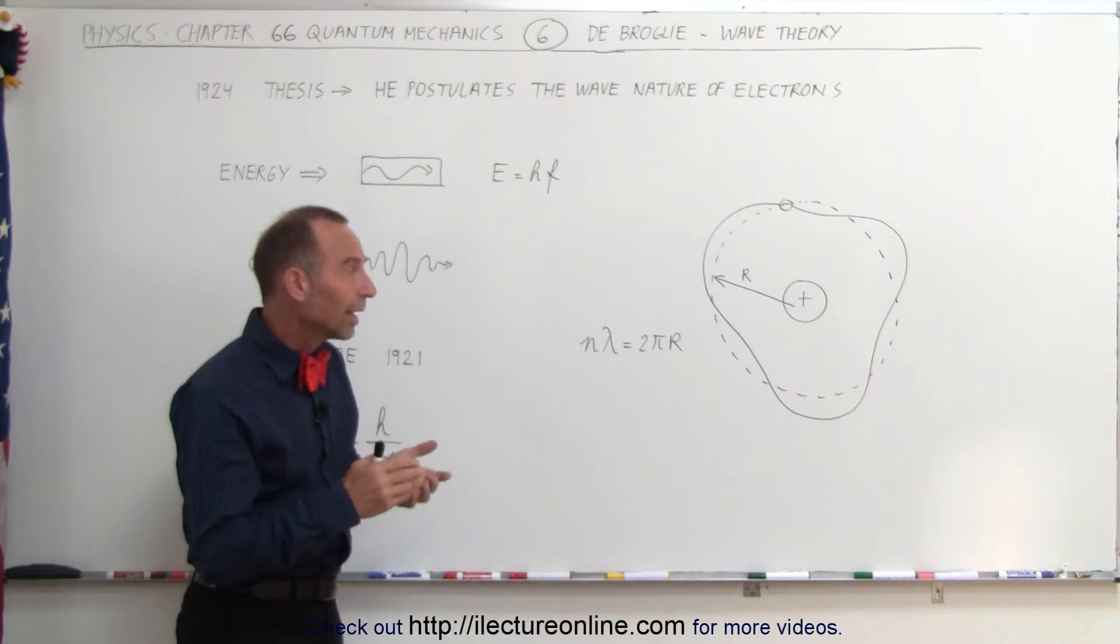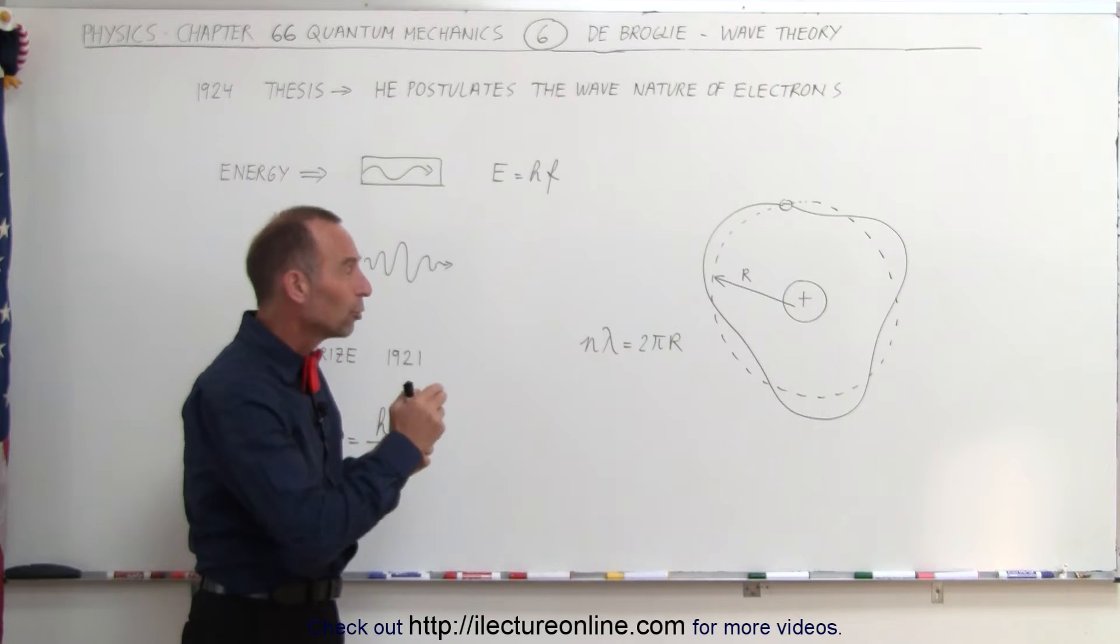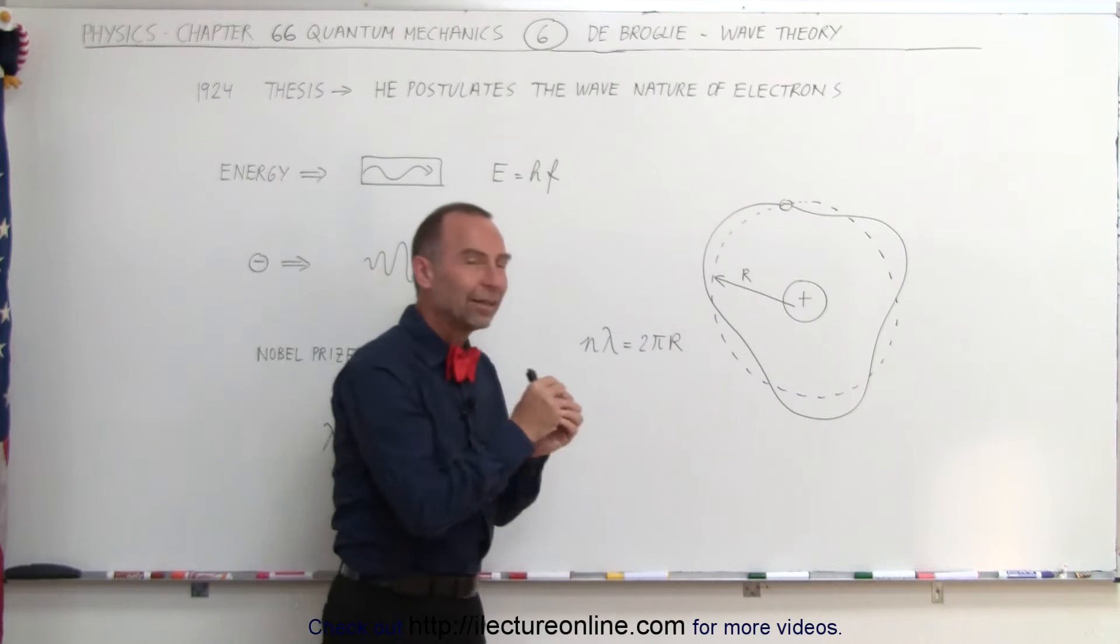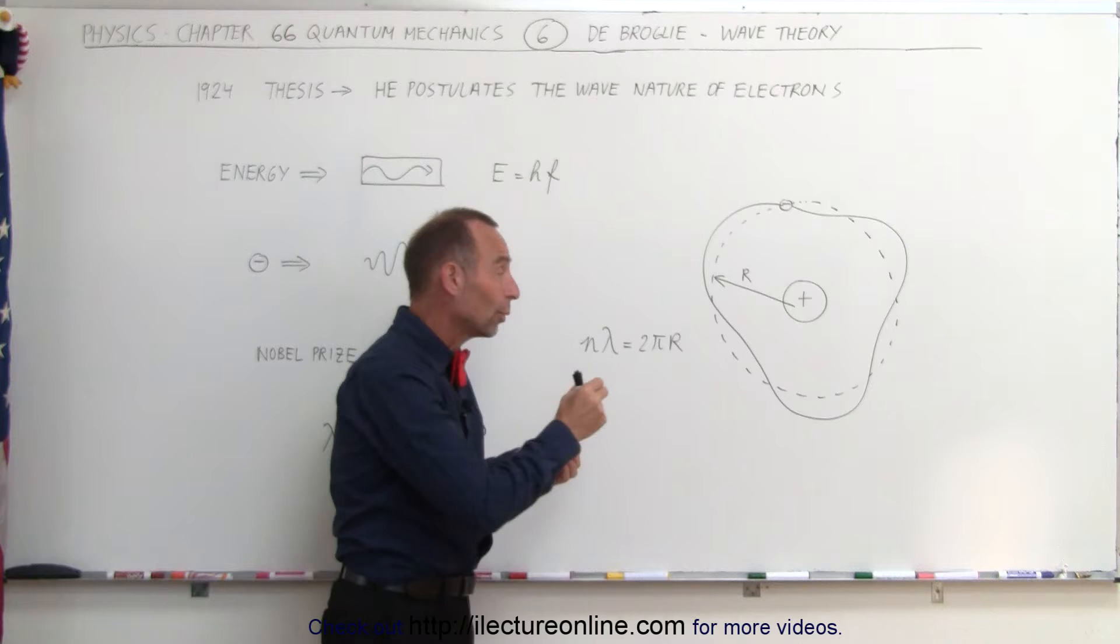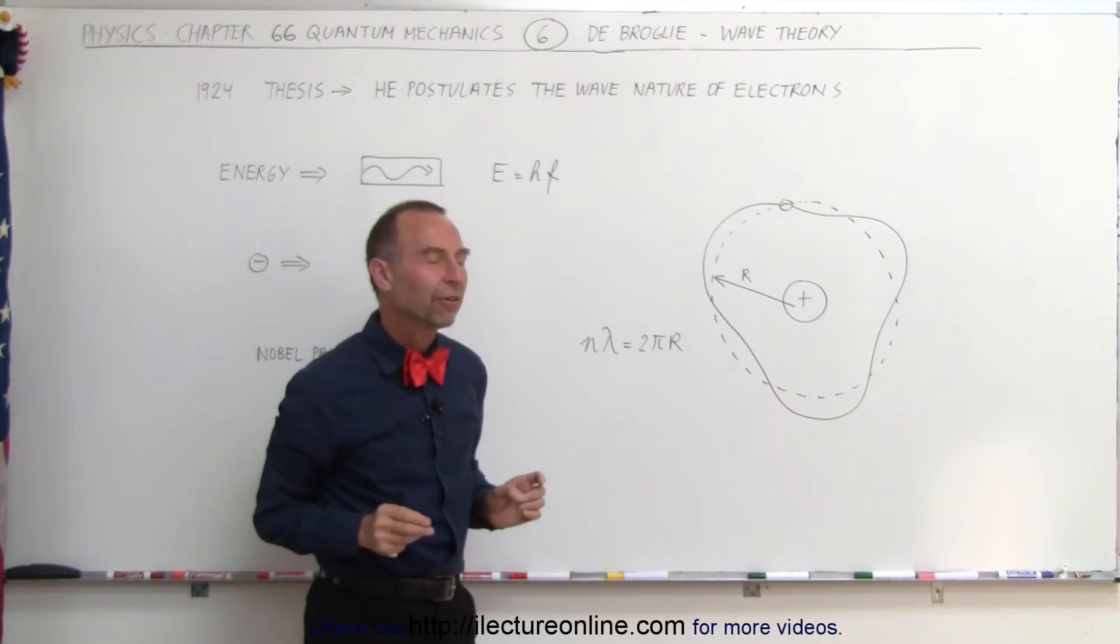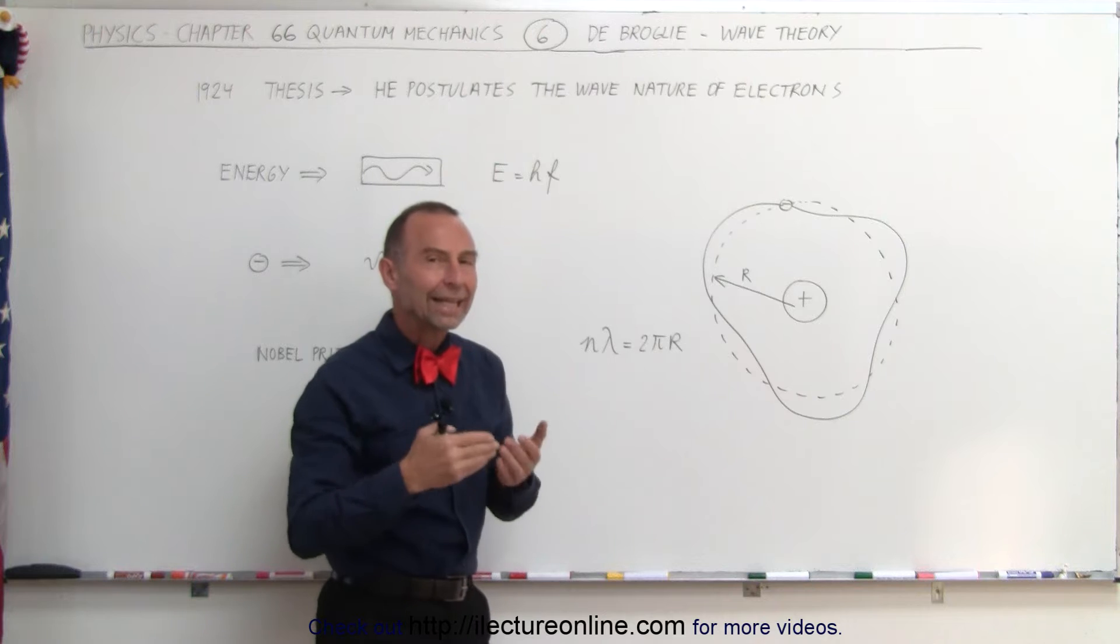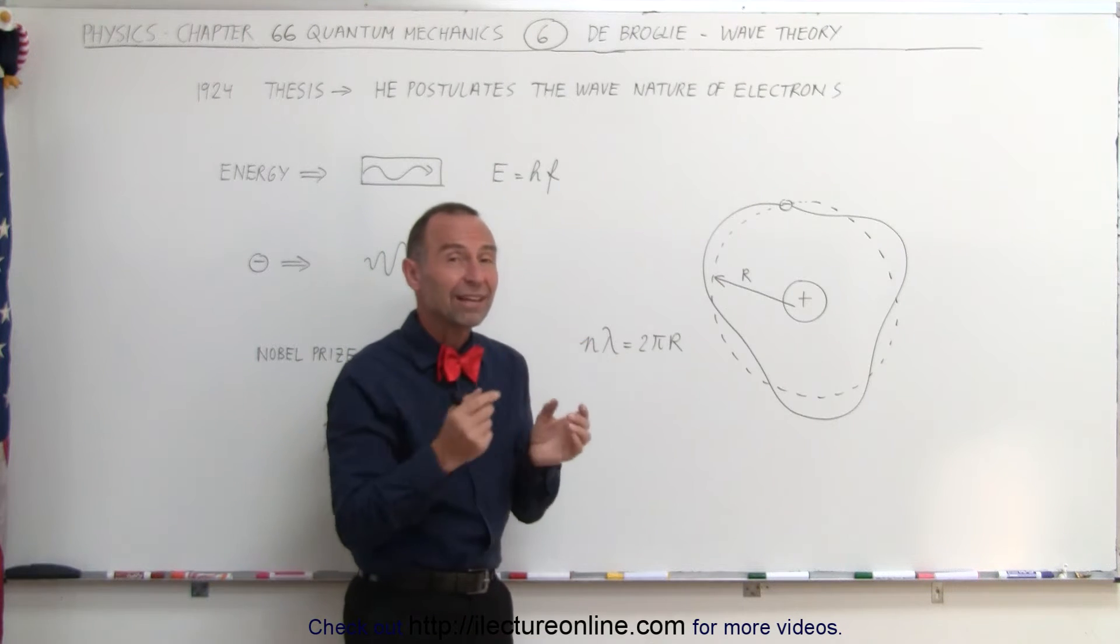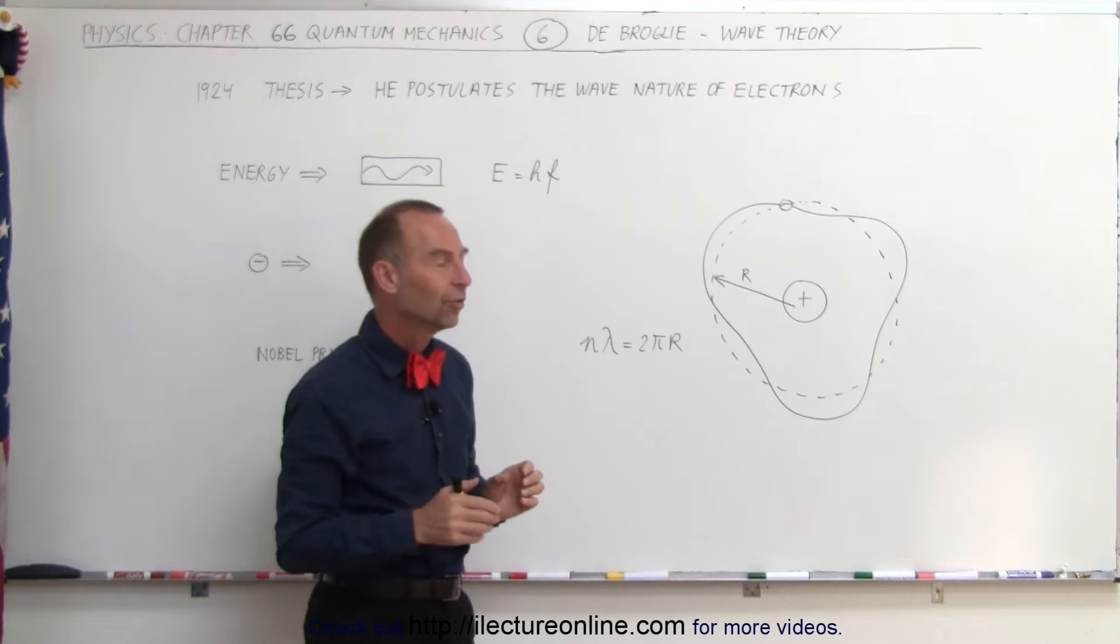We began to realize that there was some relationship between the energy levels and the fact that the energy being emitted when an electron jumped from one level to another was equal to a quantized amount of energy. We began to wonder that electrons could only exist in quantum states if they also behaved like waves.